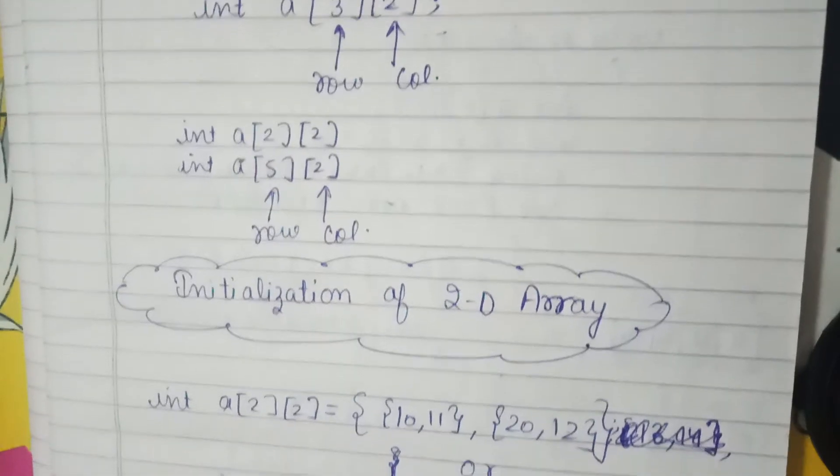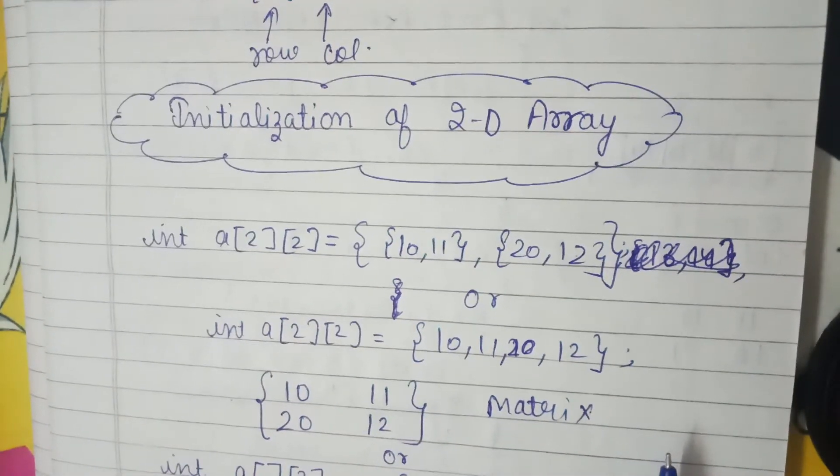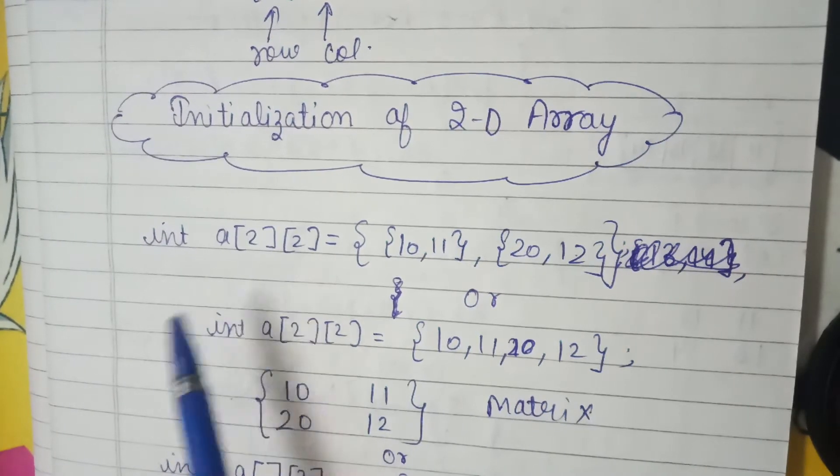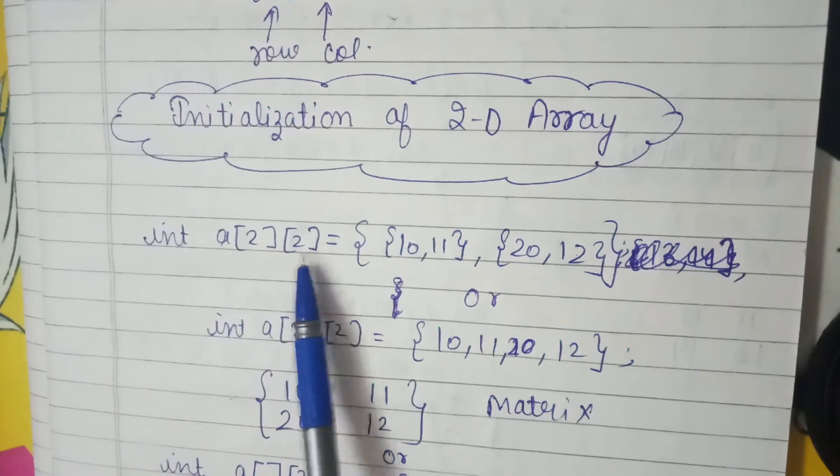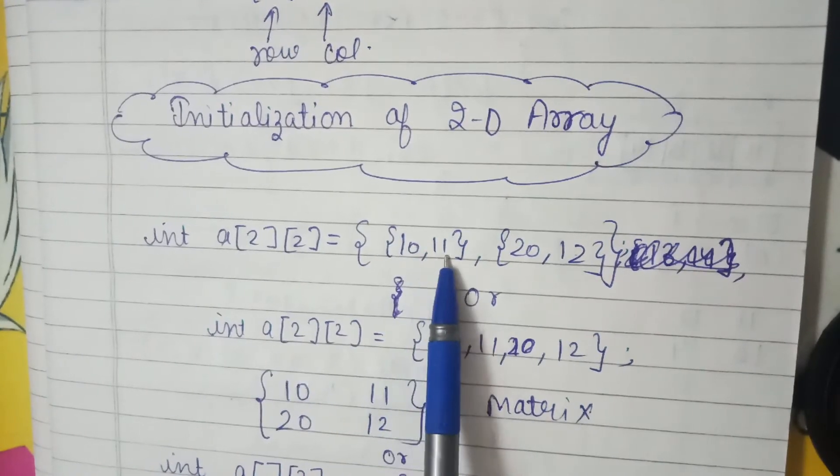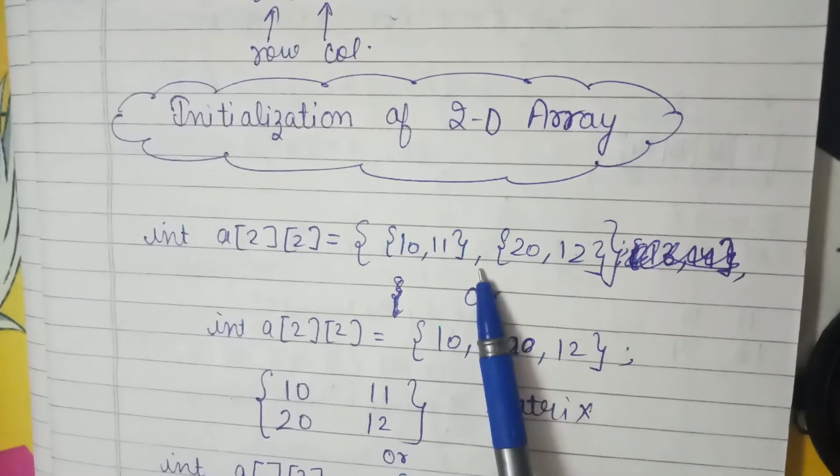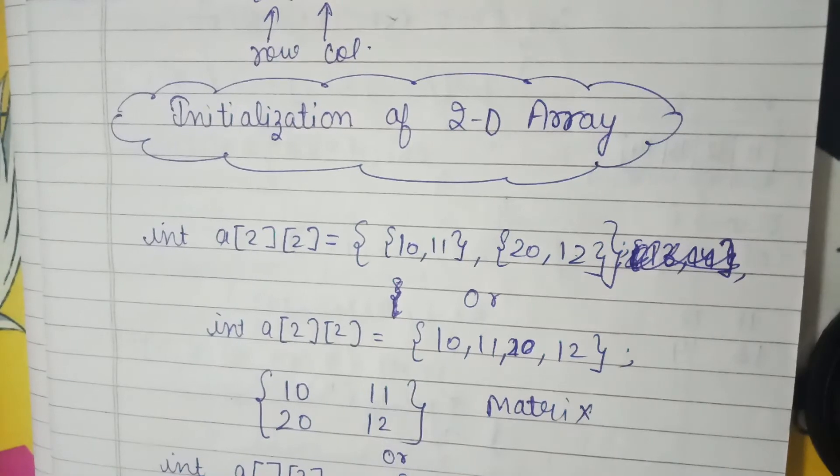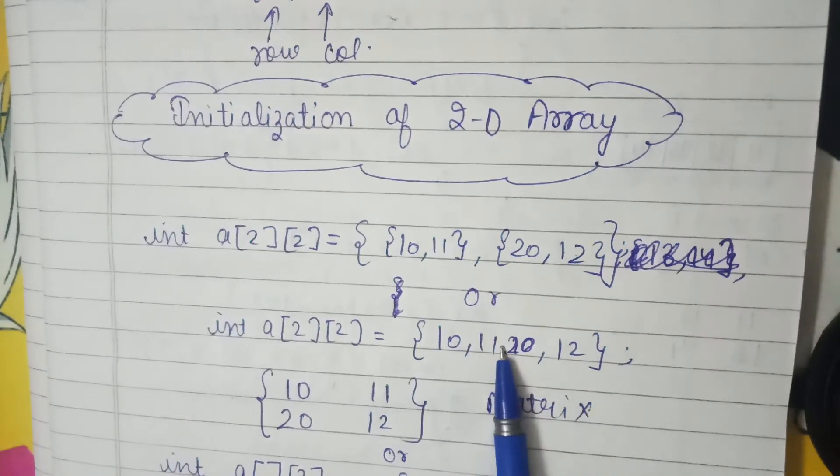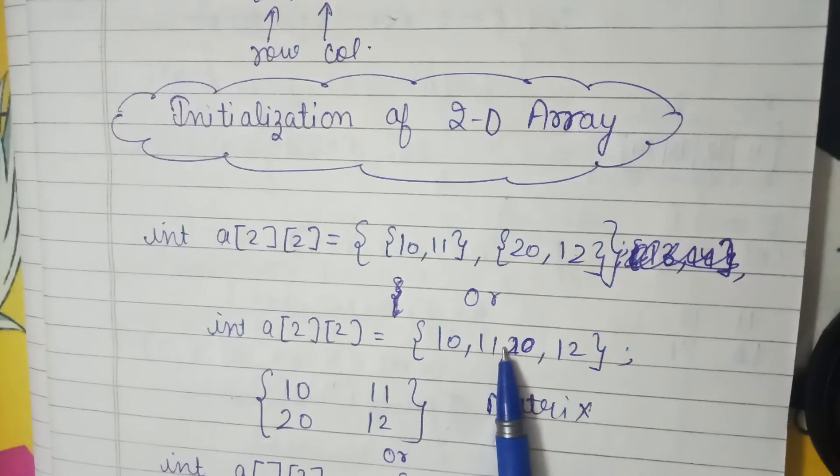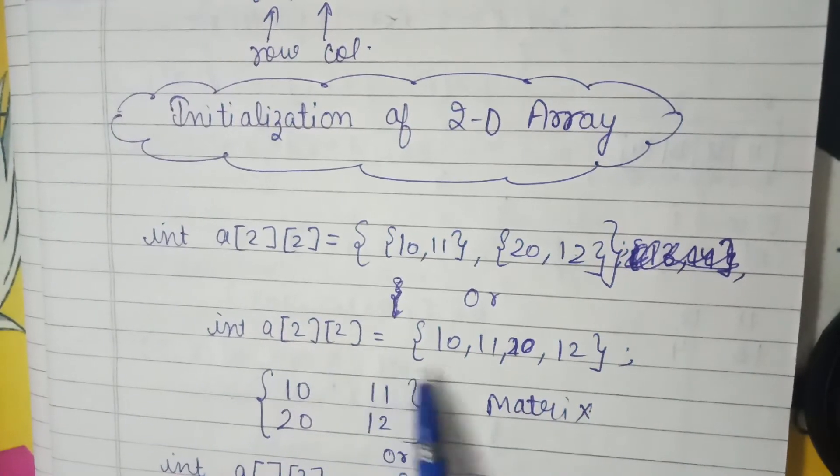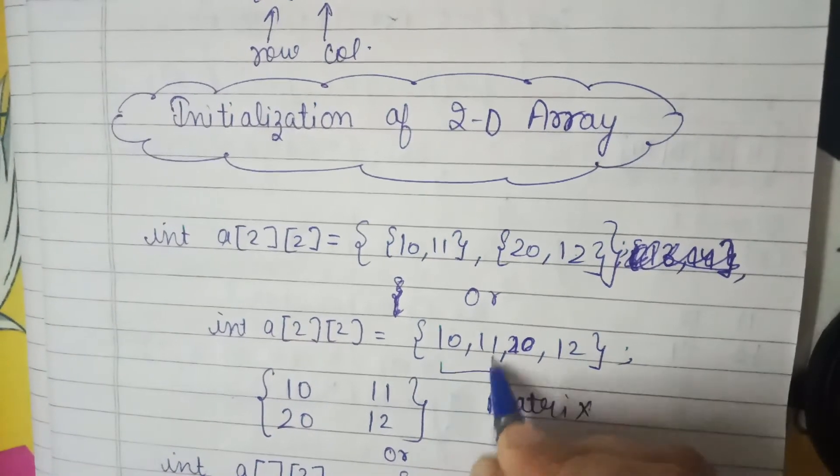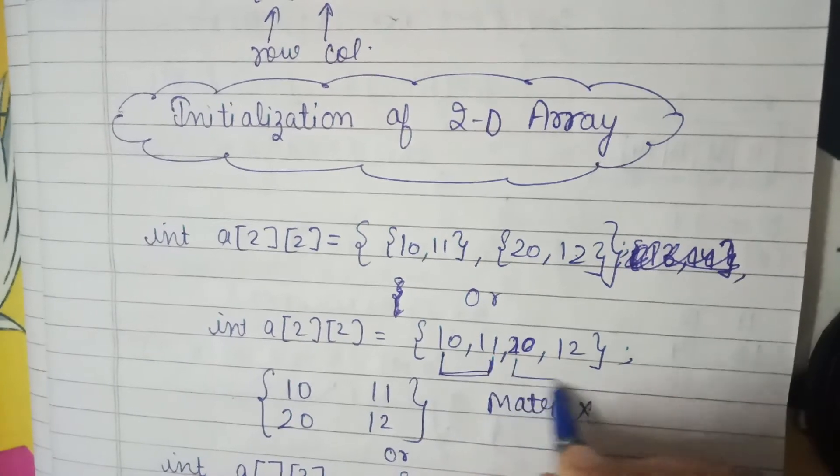Second is initialization of two-dimensional array. We can initialize values like int a[2][2], when we have data elements we can store 10, 11, 20, 12. We can use curly braces to initialize the values like int a[2][2] equals {10, 11, 20, 12}. Compiler automatically will see the first row, the second row, and the values.